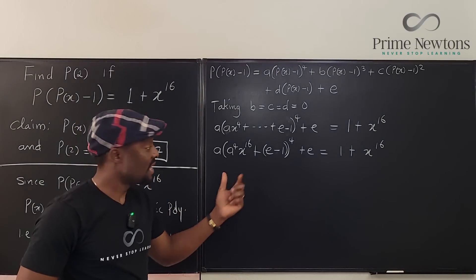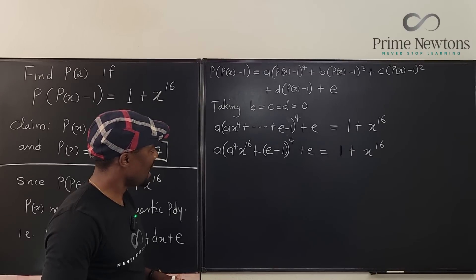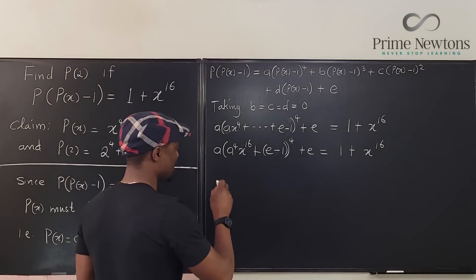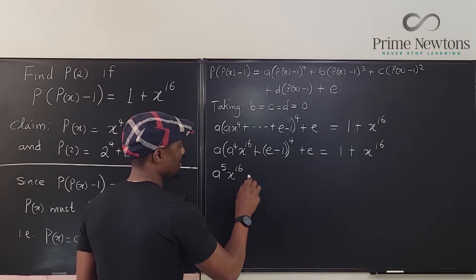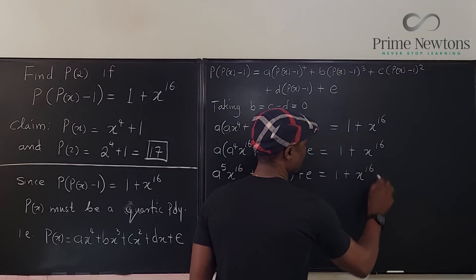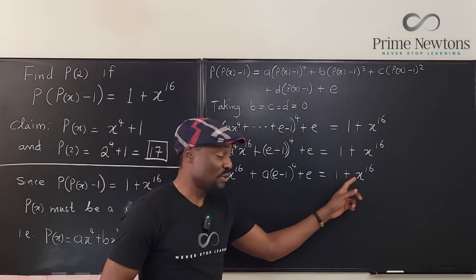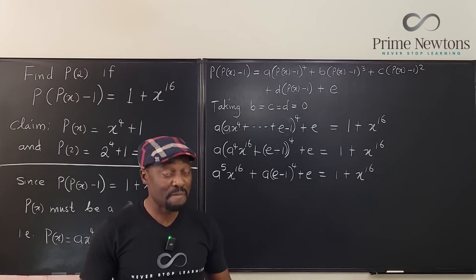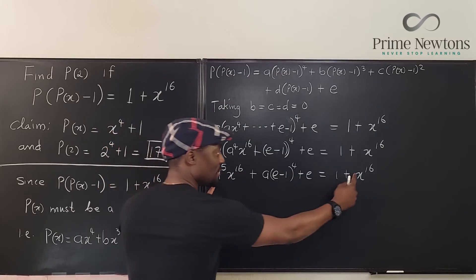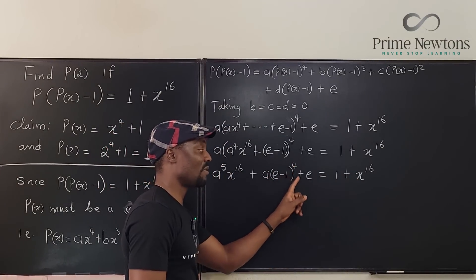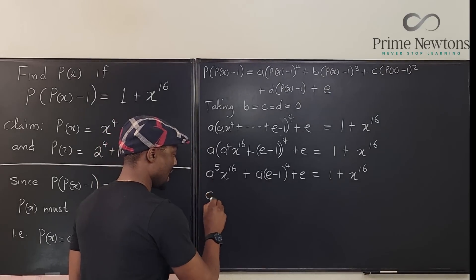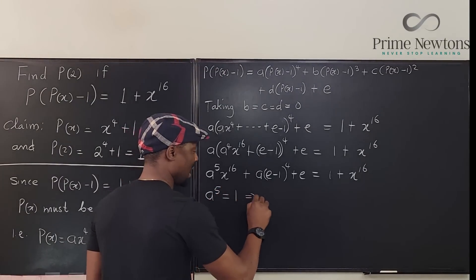Splitting the result: a to the fifth times x to the 16th plus a times (e minus 1) to the fourth plus e equals 1 plus x to the 16th. Comparing coefficients — since two polynomials are equal if they have matching degrees and corresponding coefficients — the coefficient of x to the 16th gives a to the fifth equals 1, which implies a equals 1.